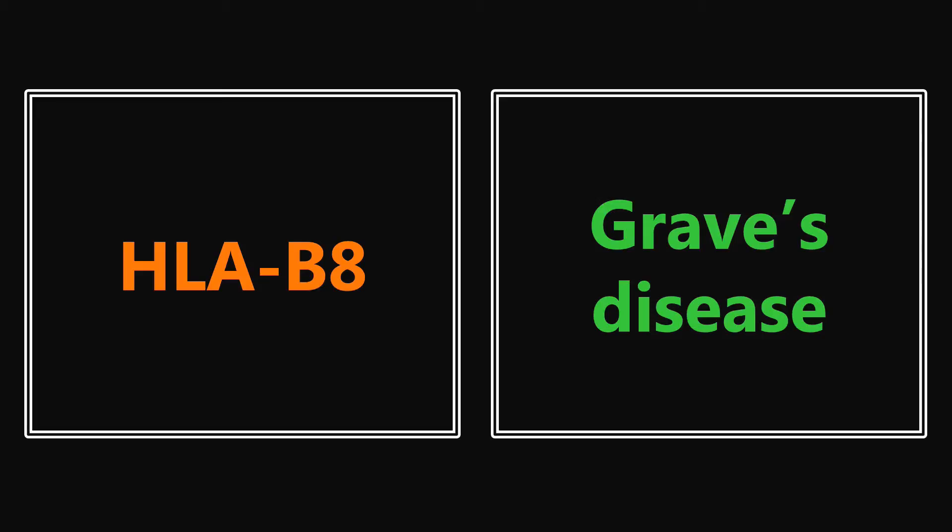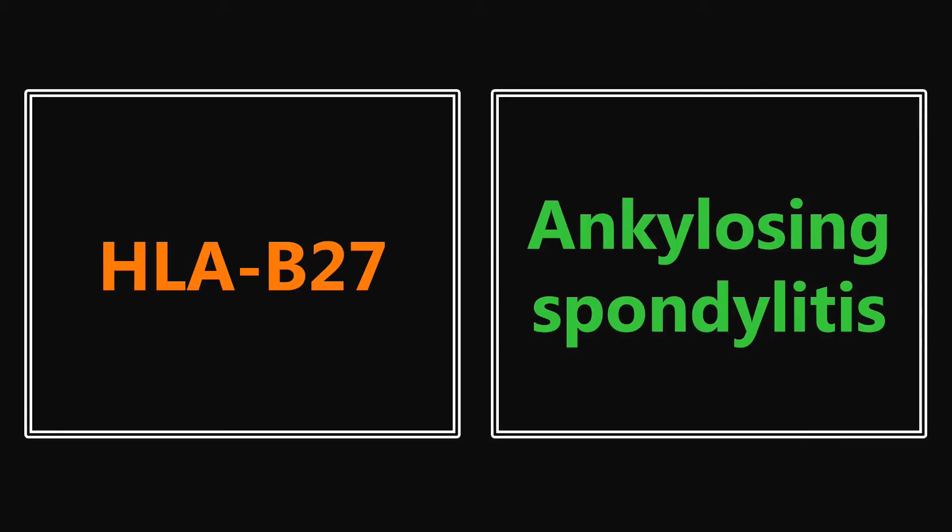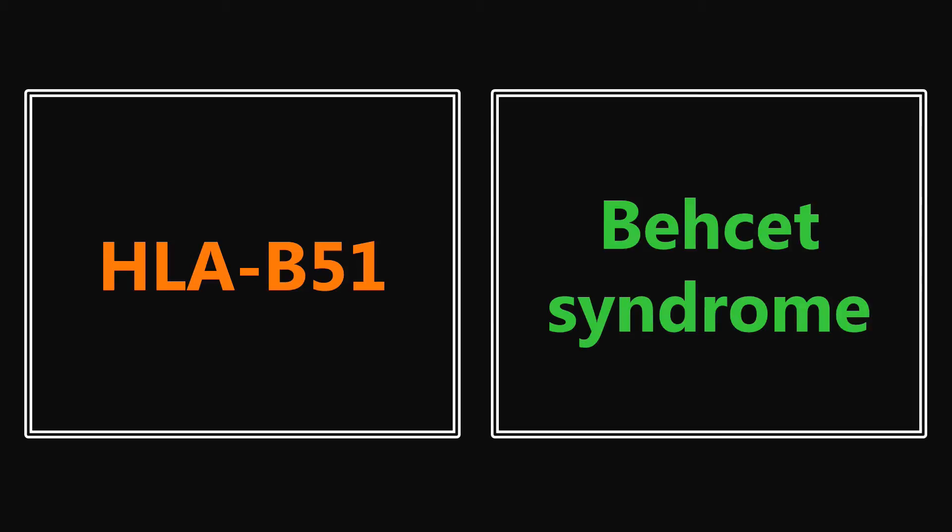HLA antigens are very high-yield for Step 1. There are a lot of different ones — I've included just a couple here — but it's really important to memorize these because this is often the only dead giveaway in a question. HLA-B8 is in reference to Graves' disease. HLA-B27 is a really common one seen in ankylosing spondylitis — about 95% of patients with ankylosing spondylitis will have HLA-B27. HLA-B51 is in reference to Behçet syndrome.